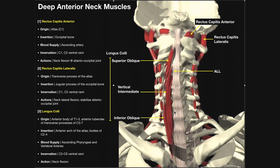The innervation of longus colli is mainly through the ventral rami of C2 through C6 spinal nerves, with some additional innervation for the lower fibers. The action of longus colli is neck flexion — when both sides contract simultaneously you get neck flexion. The primary neck flexor is the sternocleidomastoid, but longus colli also contributes. These three muscles — rectus capitis anterior, rectus capitis lateralis, and longus colli — comprise the deep layer of the anterior neck.